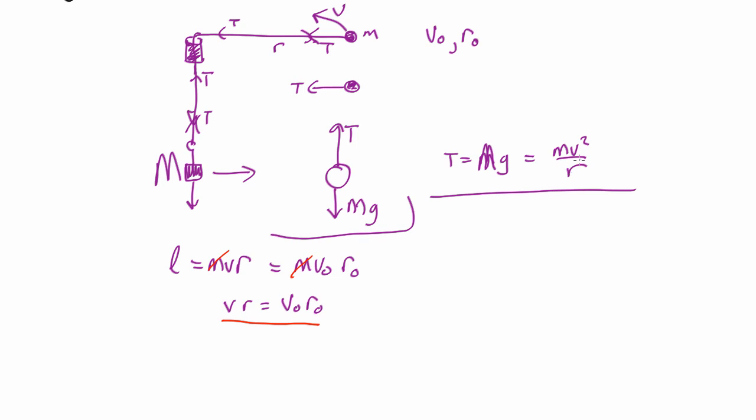So let's say we want to work out what r is. Let's rearrange this to make r. So r is going to be m v squared over Mg. And v is going to be v0 r0 over r.